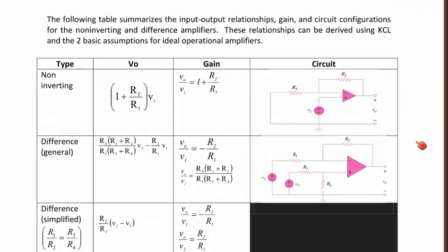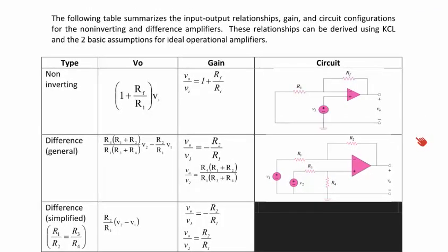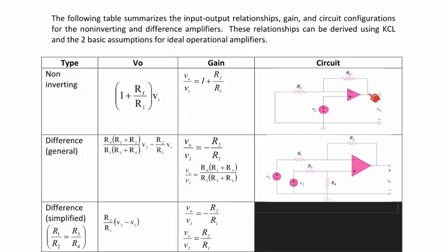For the non-inverting amplifier, V0 is equal to 1 plus RF over RI times VI. This explains why the gain can never be less than 1, because it is 1 plus the ratio of the feedback and input resistors. The gain is 1 plus RF over RI. The input voltage goes in at the positive terminal, the feedback resistor connects the output back to the negative terminal, and the input resistor is tied between ground and the inverting terminal.